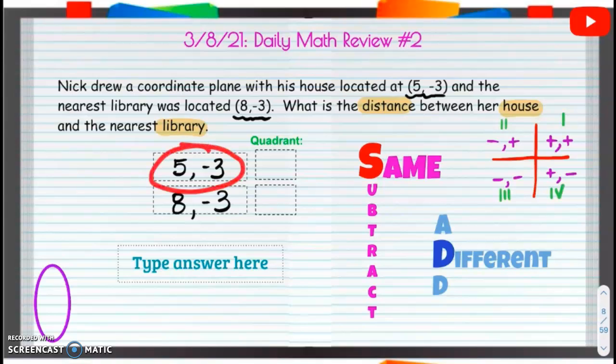What quadrant is 5, negative 3 in? Well, if we go positive 5, negative 3, we end in quadrant 4. We put quadrant 4, or IV. I'm going to put IV here and then 4 over here.